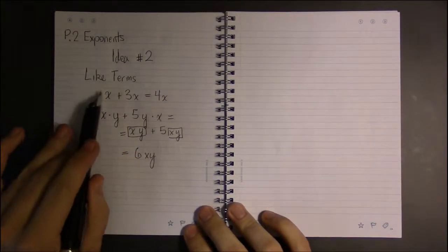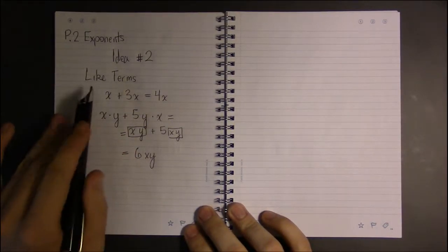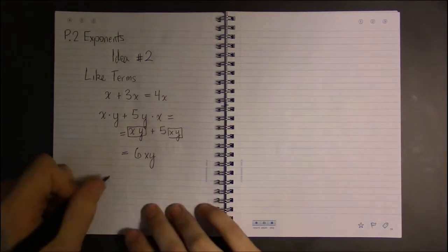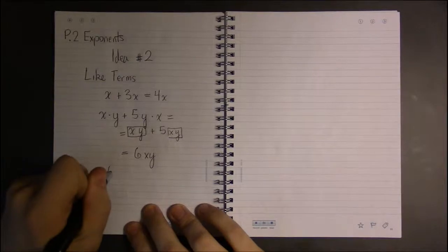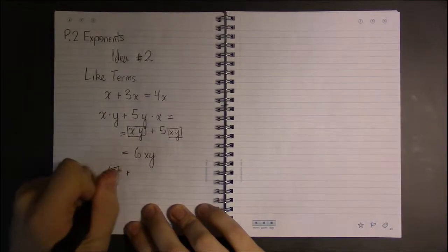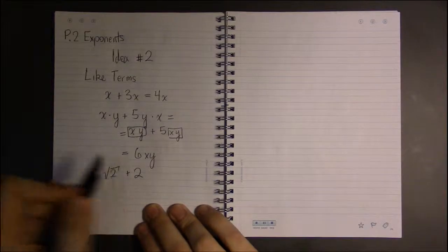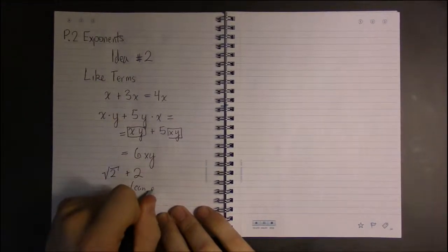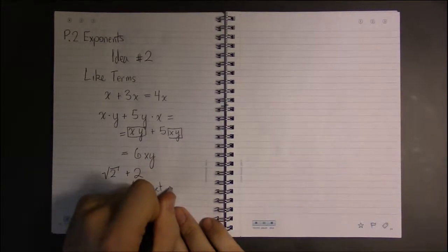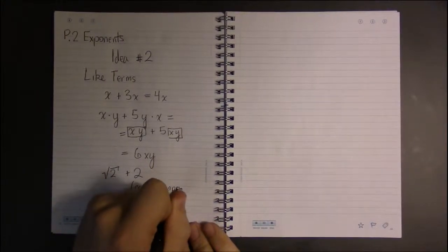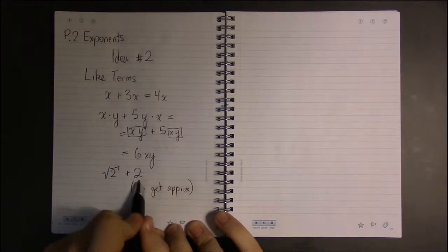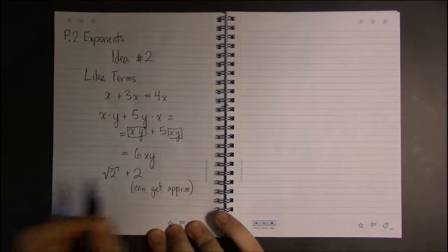Because now they're exactly the same and we end up with 6xy. Well, it turns out that radicals behave like variables do, so you can't just add square root of 2 plus square root of 2 exactly. That is, you can get an approximation but this is as simple as it gets without using a calculator.